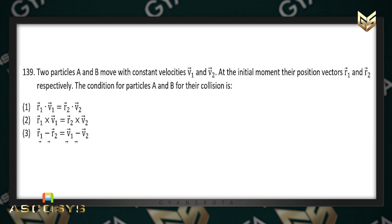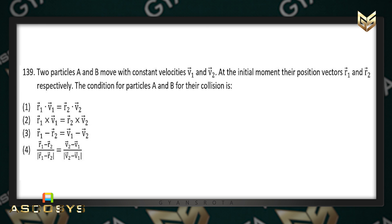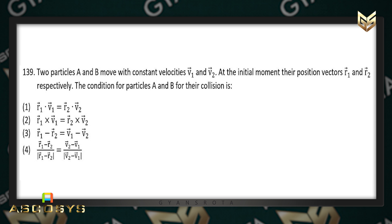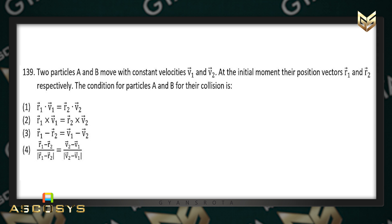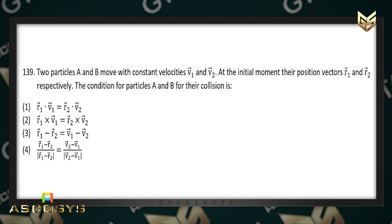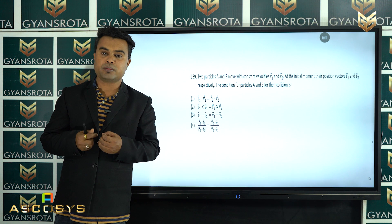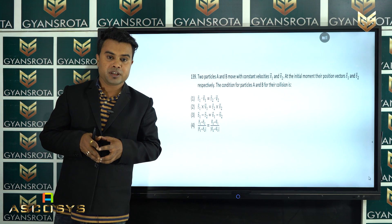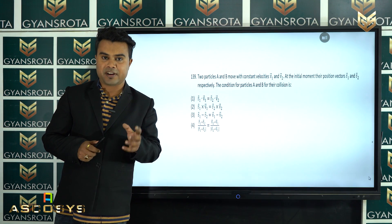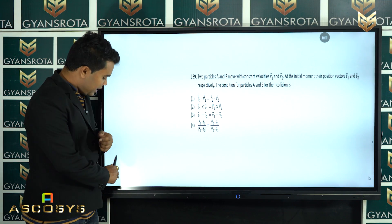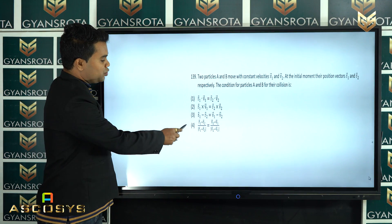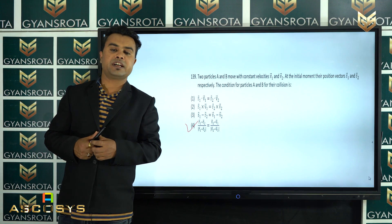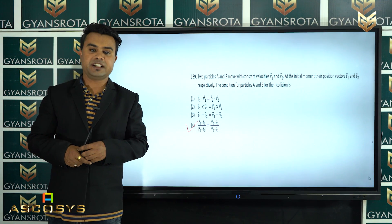Question 139: two particles A and B move with constant velocities V1 and V2; at the initial moment their position vectors are R1 and R2 respectively. The condition for particles A and B to collide is asked. This is a question from work, power, and energy involving the concept of collision. Solving it conceptually, the correct answer is option 4.